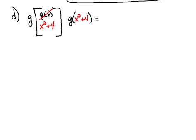Well, the G function said take the variable and square it and then add 4. But we're going to be using X squared plus 4 for our variable.